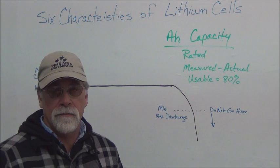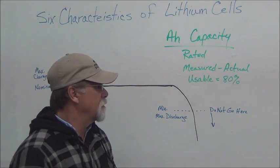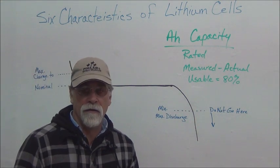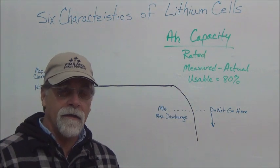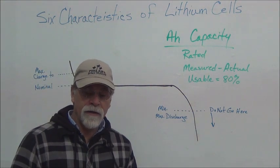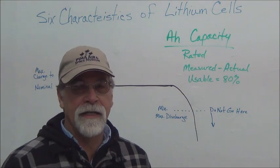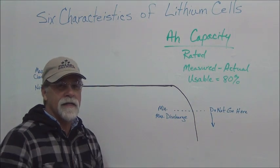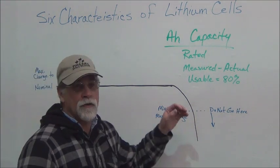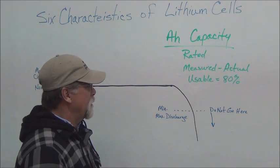But then there's an actual measured amp hour value. And on the 100 amp hour cells that we get, it's normally like 114, 116, somewhere in that ballpark, that's the actual measured amp hour capacity.